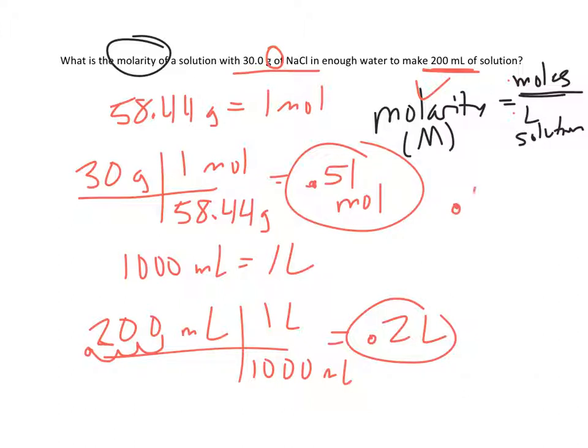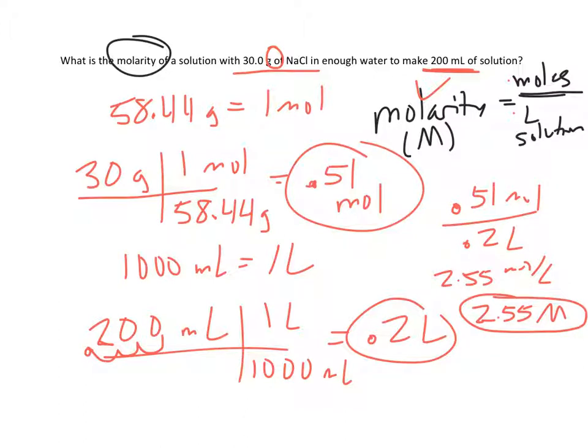So the molarity is simply going to be the moles of solute, 0.51, divided by the liters of solution, 0.2. And I do this, and I get 2.55. And that will be moles per liter, or big M, molarity, 2.55 molarity. And that's how we calculate molarity. But that's not the only type of problem we could get.